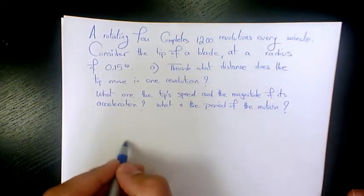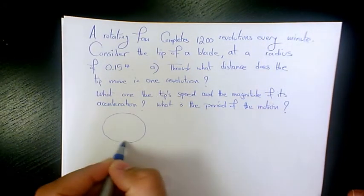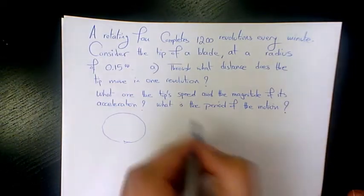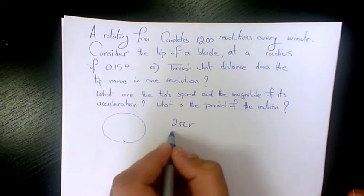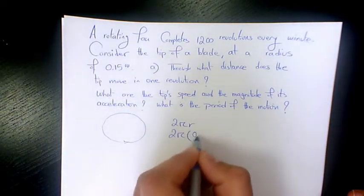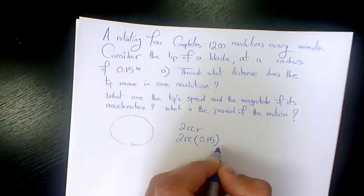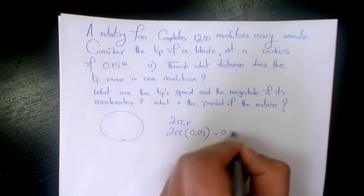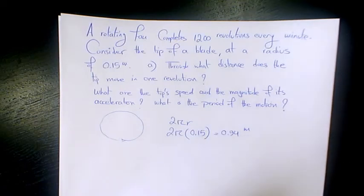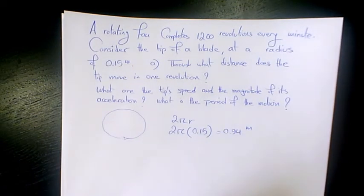When it says the time of one revolution, it means we have one full circle which is equivalent to 2πr. So it's going to be 2π times the radius of the blade, which is 0.15. That's gonna be 0.94 meters.